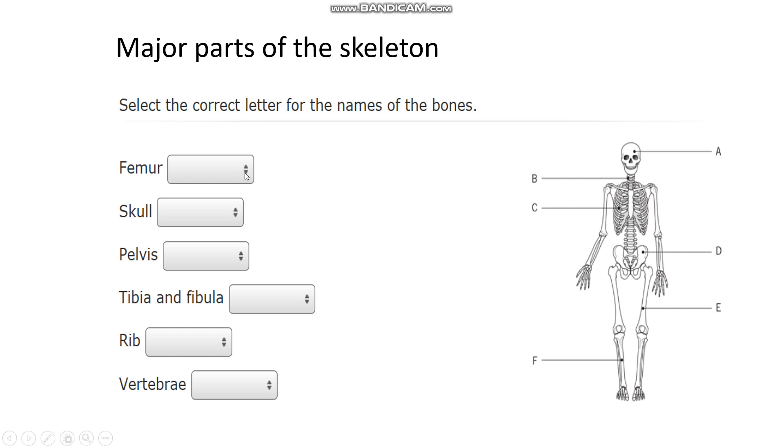The femur is E, that's your thigh bone. The skull, hopefully we all got that, that was A. The pelvis, this part here, is D. Tibia and fibula are F, those are your lower leg bones. Your ribs, again hopefully you'll have got that, that is C. And the vertebrae are the small bones in your backbone, so that would be B.